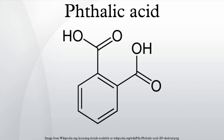Production: Phthalic acid is produced by the catalytic oxidation of naphthalene directly to phthalic anhydride and a subsequent hydrolysis of the anhydride.